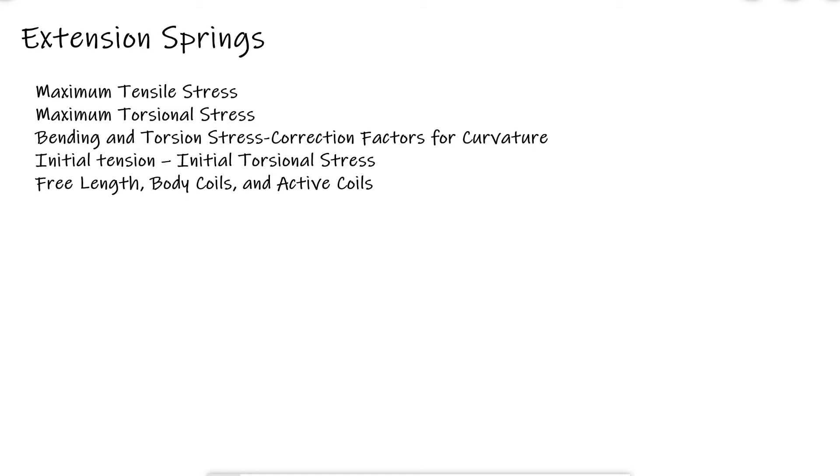The main differences between extension springs and compression springs is that extension springs are subjected to tensile loading since the end sections need to transfer the load to the body of the spring, and that they are usually intentionally manufactured to carry an initial tension.